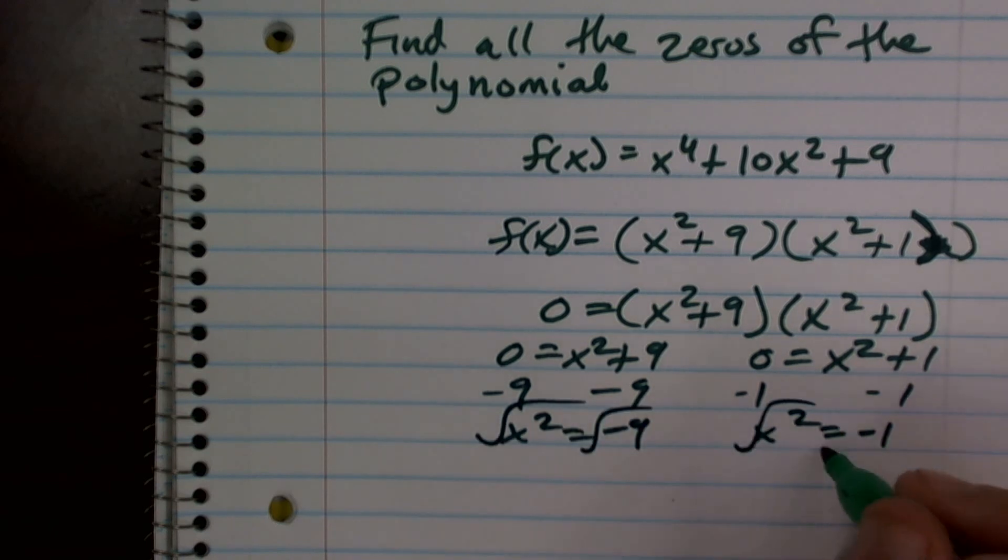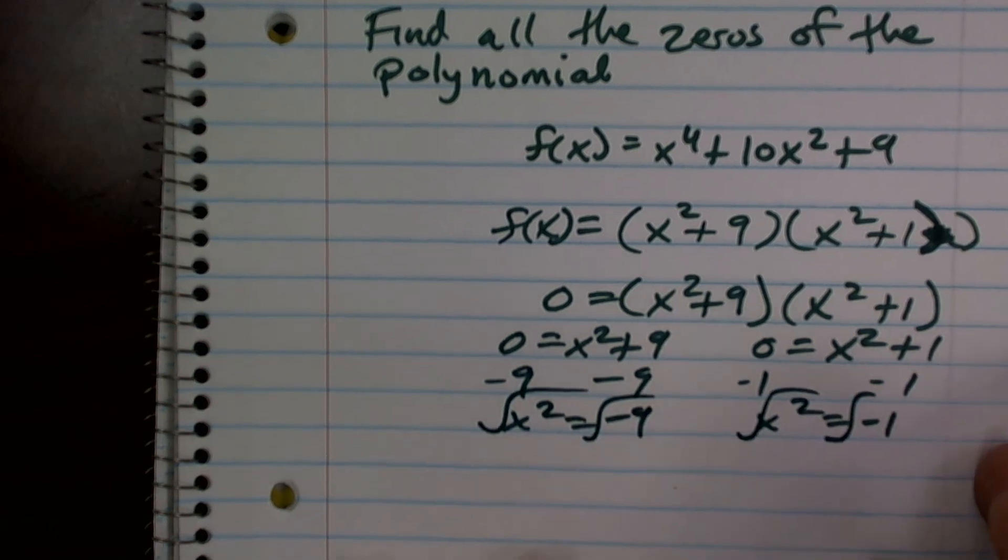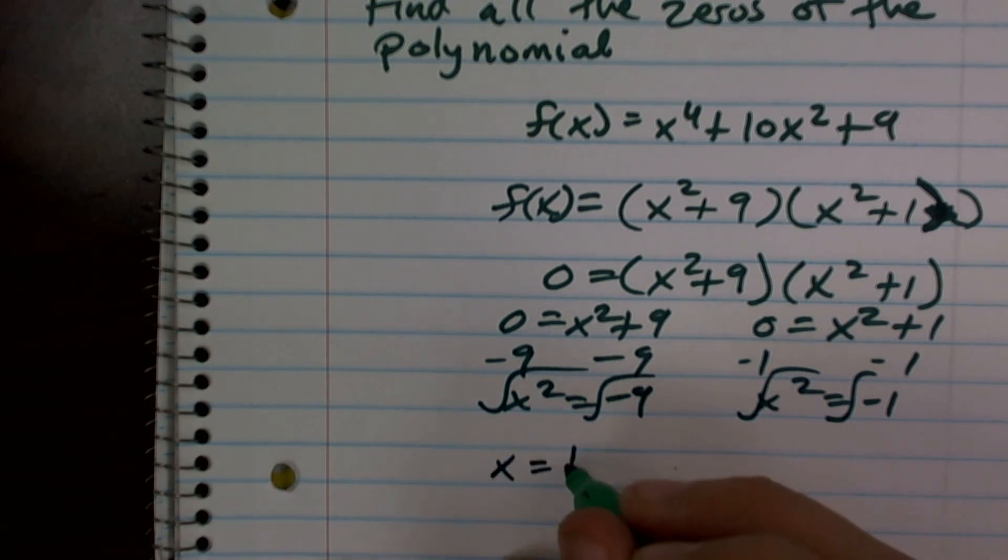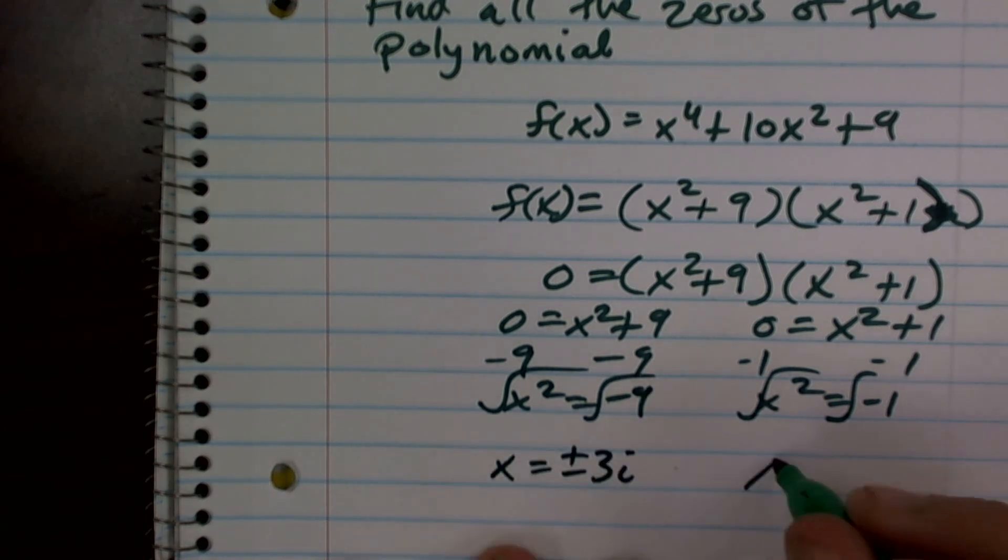I'll take the square root of both sides. I cannot take the square root of a negative number, so I'm going to get an i, so I'll have x equals plus or minus three i, and x equals plus or minus i.